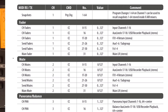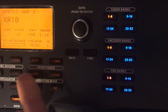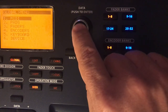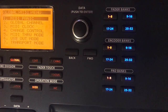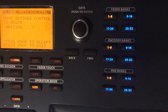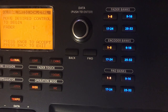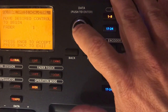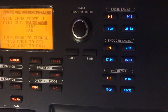On the display, we go to Global, then MIDI, then Change Control. The Motor is now waiting for us to move a slider. I move slider number one, and as you can see, fader one is automatically selected.